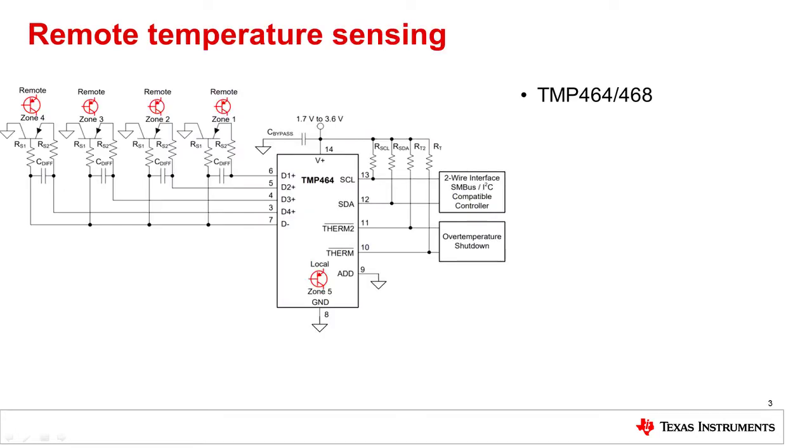The TMP464 and 468 are both referred to as remote temperature sensors. Remote temperature sensors are unique because of their capability to detect temperature in multiple places in a functionally simultaneous timeframe and aggregate that data to a single integrated circuit on your system. The common method for sensing of these devices is to monitor a distant PN junction of a BJT. The base emitter voltage of a BJT will change predictably with temperature.